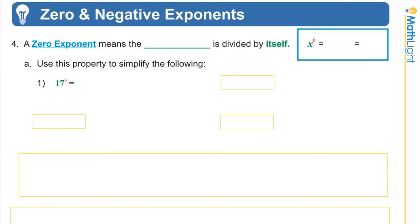Well, this is an exciting lesson involving zero and negative exponents. Let's first start off with a zero exponent. In other words, what do you do if the exponent is zero? Here's the key: it means the base divided by itself.